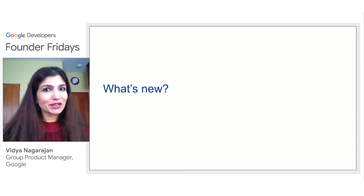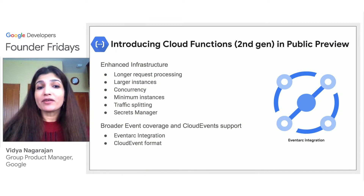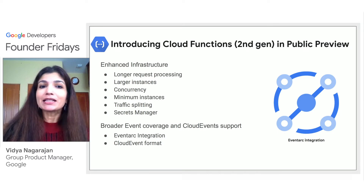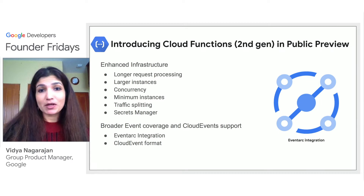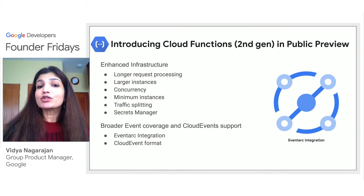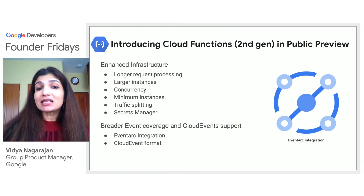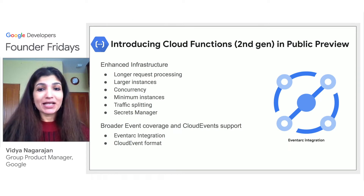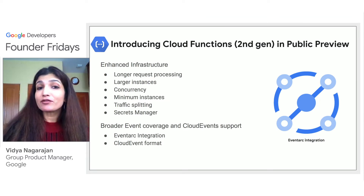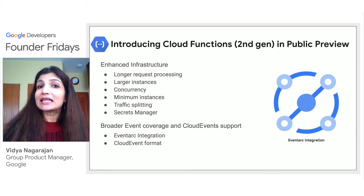So now let's take a look at what's new. Cloud Functions, the second generation, is in public preview. I'm excited about some of the key benefits around infrastructure. These include longer request processing — you can now run your Cloud Functions longer than the five-minute default, up to 60 minutes, making it easier to run longer request workloads such as processing large streams of data from GCS or BigQuery. Larger instances allow you to leverage up to 16 gigabytes of RAM or four vCPUs, enabling in-memory, compute-intensive, and more parallel workloads. Concurrency allows you to leverage up to 1,000 concurrent requests with a single function, minimizing cold starts and improving latency when scaling.